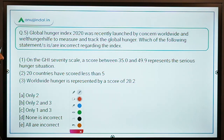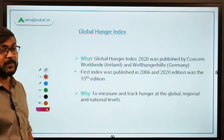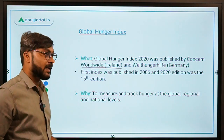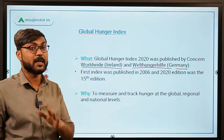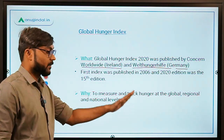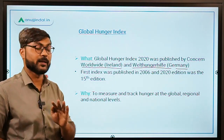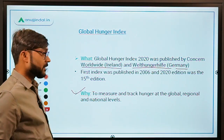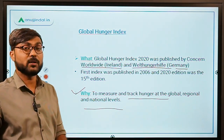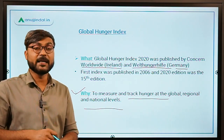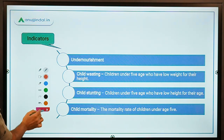Now let's talk about the Global Hunger Index, which is the most important topic today. The Global Hunger Index was published by Concern Worldwide, an Irish organization, and Welthungerhilfe, a German organization — remember these names as they can be asked in exams. This index measures and tracks hunger at the global, regional, and national level. It was first launched in 2006, and this year's edition is the 15th edition.